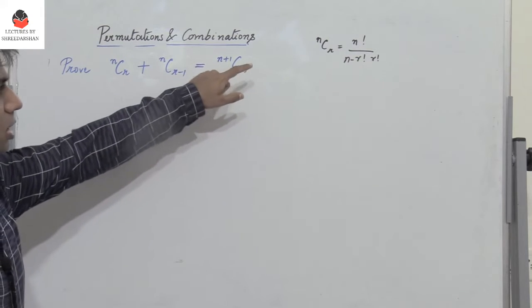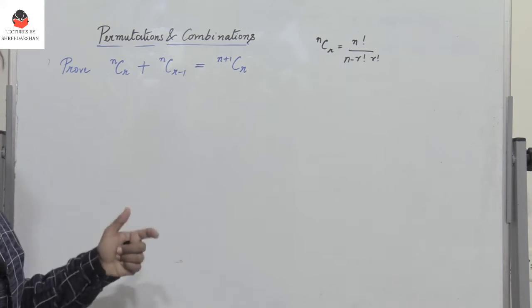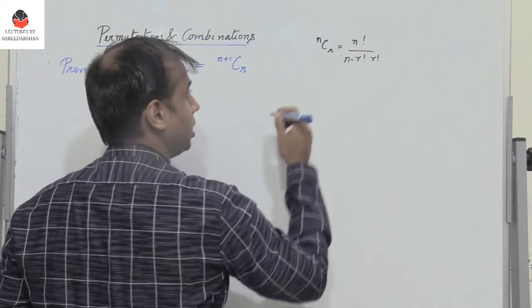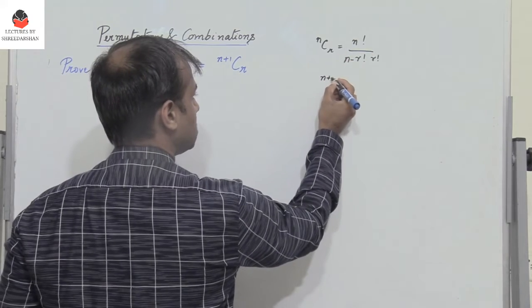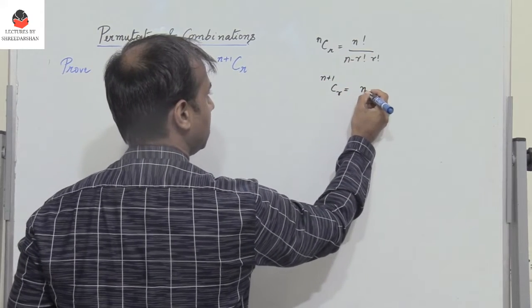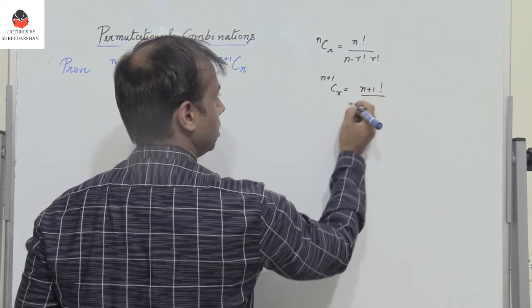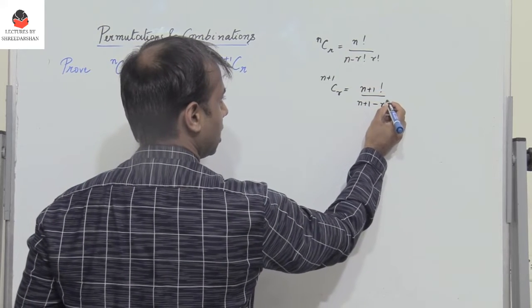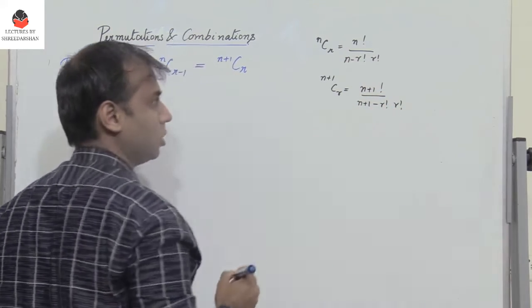On the right hand side, instead of N there is N plus 1. So wherever N appears, we replace it by N plus 1. Therefore, N+1CR would be (N+1) factorial divided by (N+1 minus R) factorial into R factorial.